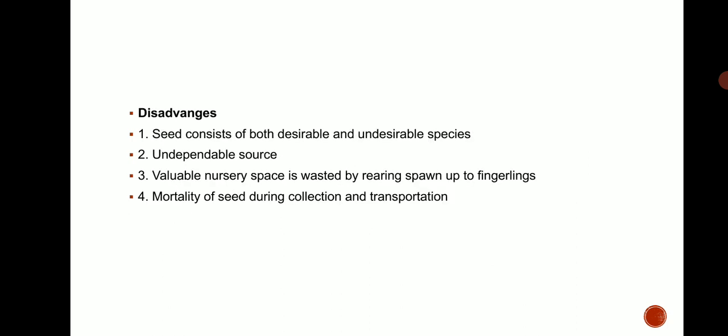Disadvantages: Seed consists of both desirable and undesirable species. It is an undependable source. Valuable nursery spawn is wasted by rearing spawn up to the fingerlings stage. There is also mortality of seed during collection and transportation.